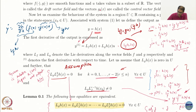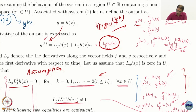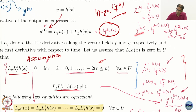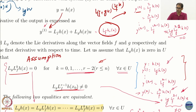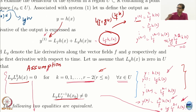You will get h; the first derivative will contain Lg h multiplying the control. In the second derivative you will have Lg Lf h multiplying the control. And if you keep going, the (r−1)th derivative will have Lg Lf^(r−2) multiplying the control. You can see the pattern: Lg, Lg Lf, Lg Lf², Lg Lf³, up to Lg Lf^(r−2).